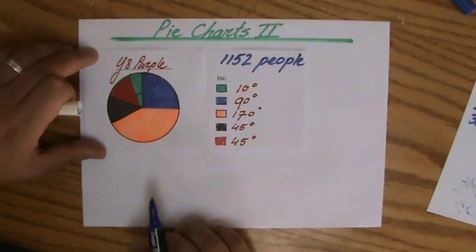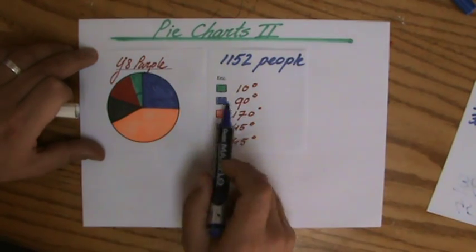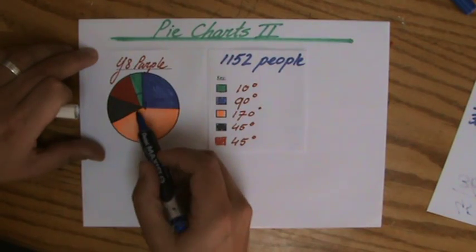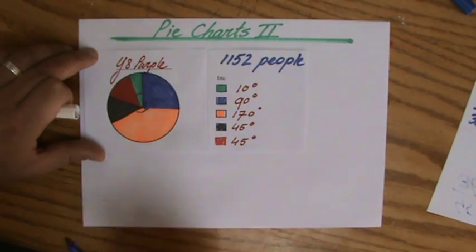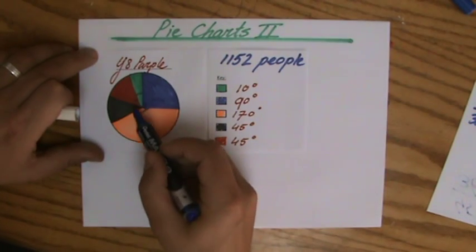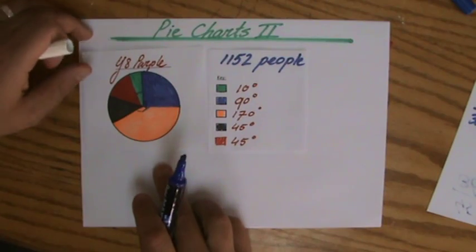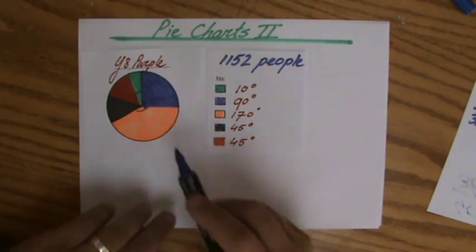90 degrees is the perpendicular angle here for the blue - that makes sense. 170 for the orange - the most popular color clearly. 45 and 45, so they are equally popular: red and black. It's a fairly large class, my year 8 purple.